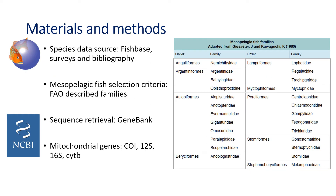To create the checklist, we chose FishBase as the main information source, as it is the fish species reference database and provides information such as geographical distribution, taxonomy, and depth ranges of species. This information was later completed with species found in several surveys of the Mediterranean and North Atlantic.